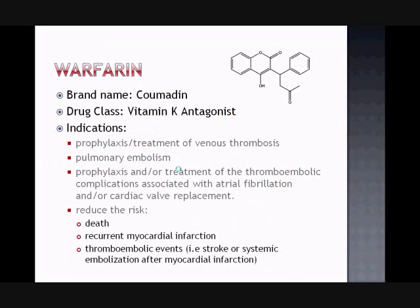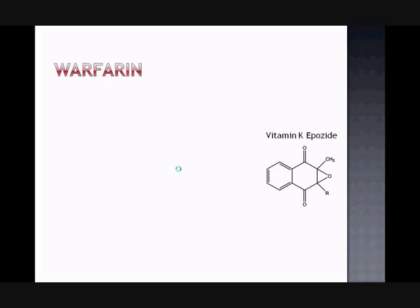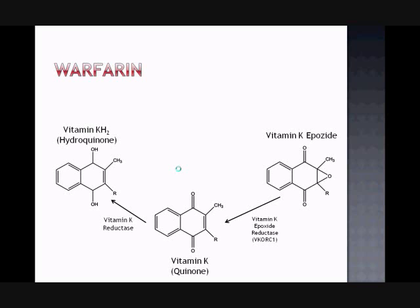Warfarin, also known as Coumadin, is a vitamin K antagonist used to prevent and treat clots. To understand how warfarin works as a vitamin K antagonist, one must understand the role of vitamin K in coagulation. Vitamin K is a cofactor necessary for the carboxylation and maturation of certain proteins into functional coagulation factors necessary for the coagulation cascade to proceed. The reduced version of vitamin K necessary to activate these factors comes from vitamin K epoxide through a series of enzyme-catalyzed reactions.